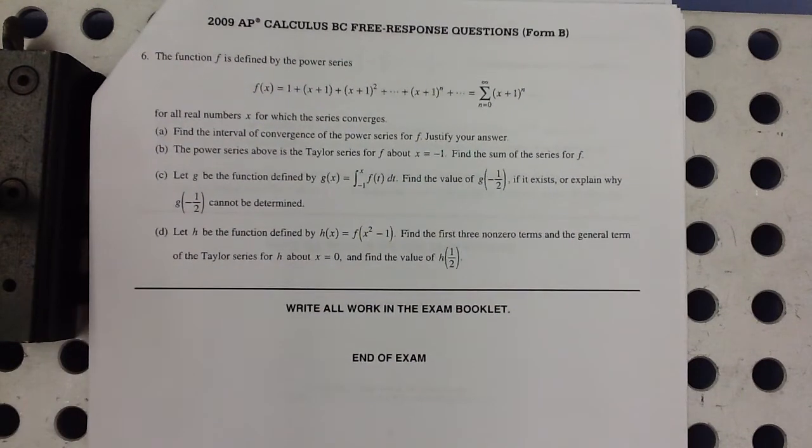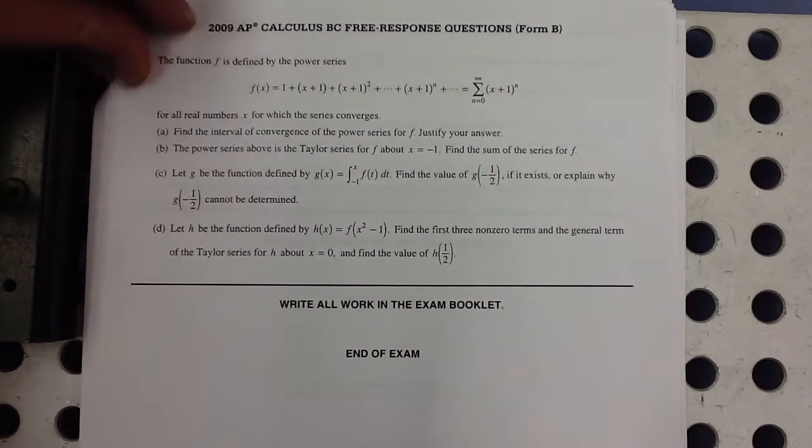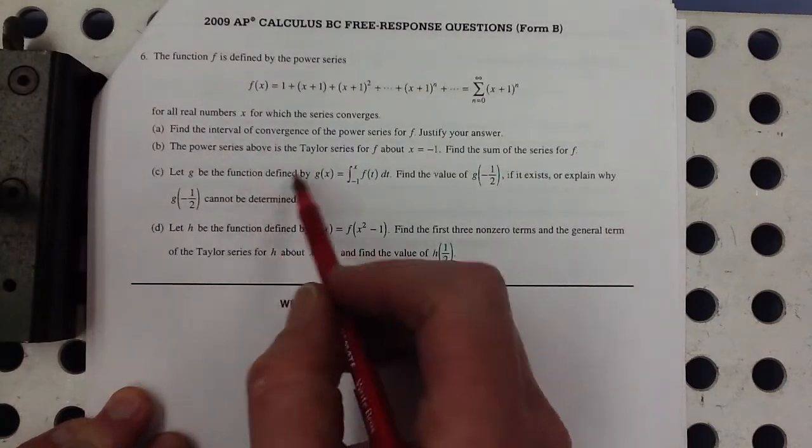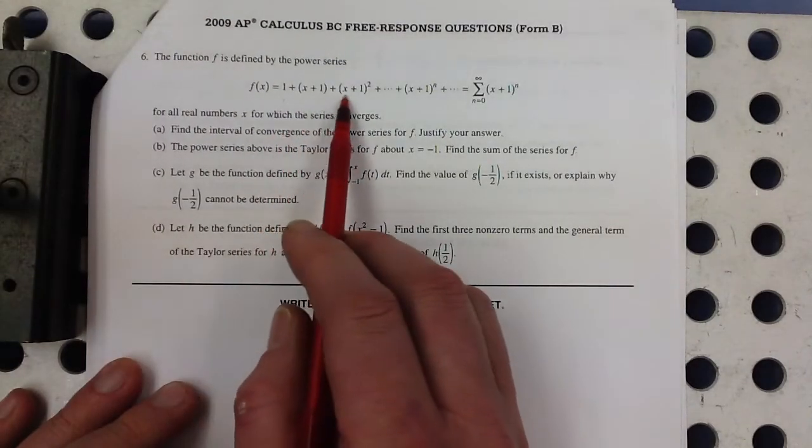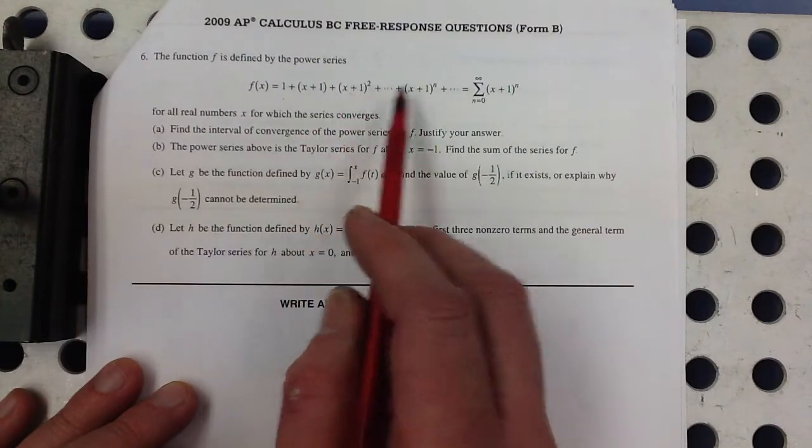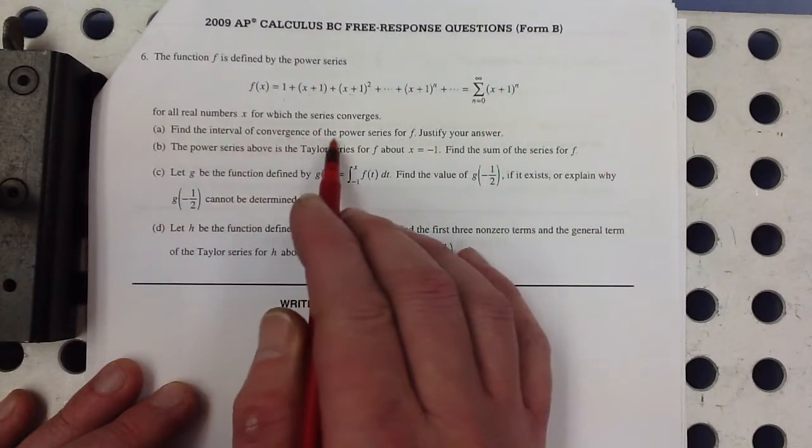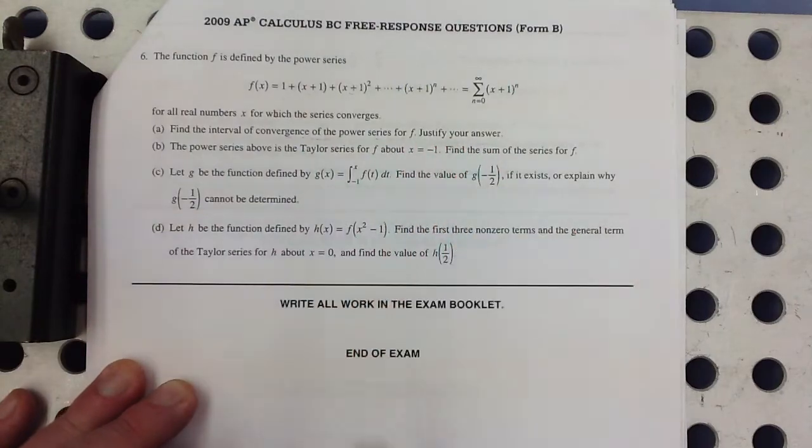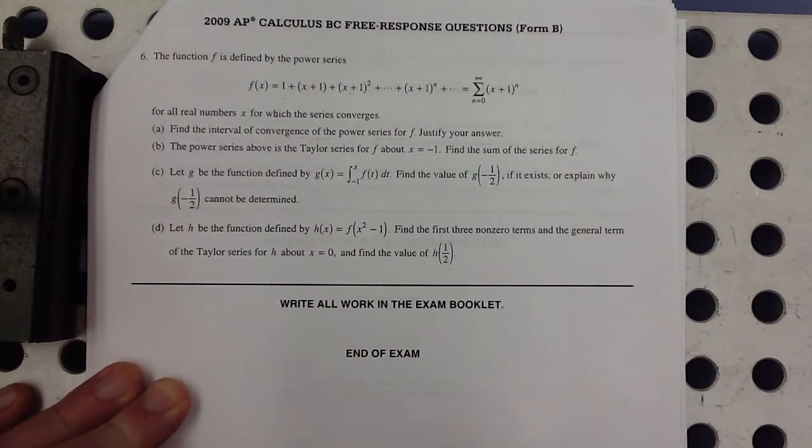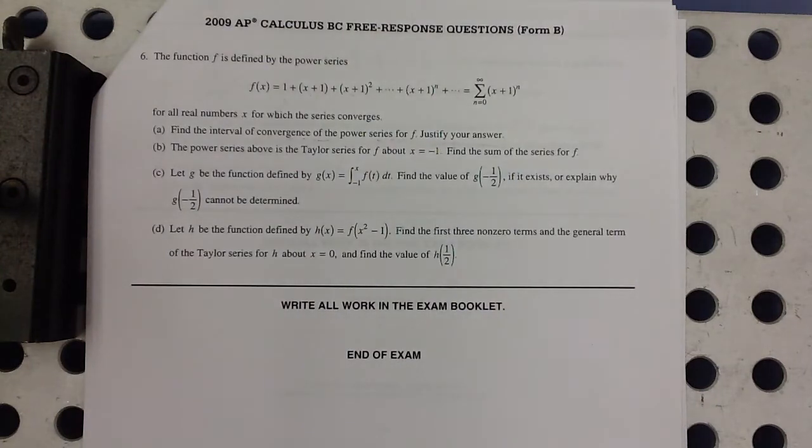2009, Form B, number 6, sequences and series. So we've got a series. It looks like it's centered at negative 1. Find the interval of convergence of the power series and then justify our answer. Well, this is geometric. So there's more than one way to do it. You could do it using the ratio test.